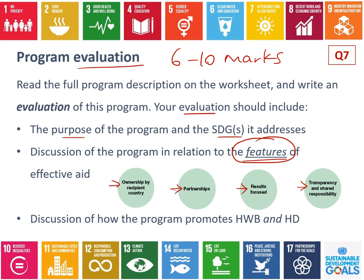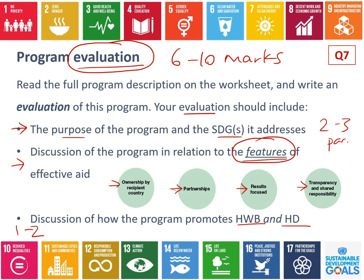You also need to discuss how the program promotes health and wellbeing and human development. When answering in the worksheet, you'll be repeating some things from previous questions - those are used to scaffold your ability to answer this type of question. Your response should be in paragraph form, probably two to three paragraphs: one describing the program and how it's implemented, one linking to features of effective aid with specific parts of the program, and one to two paragraphs on how it promotes health and wellbeing and human development. An exemplar response will be uploaded after you've completed it.